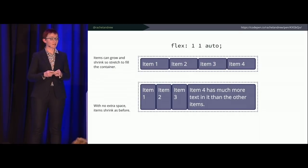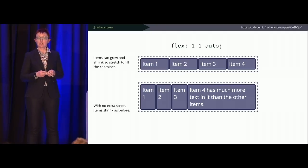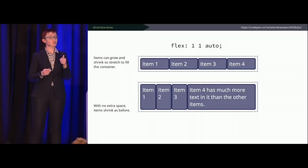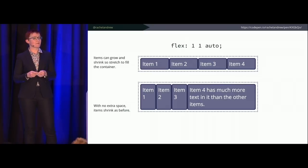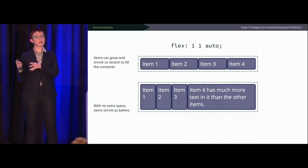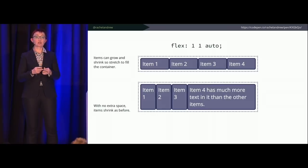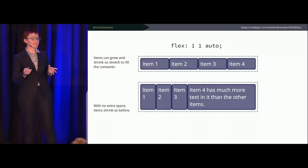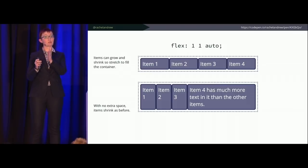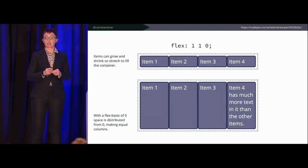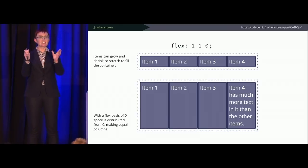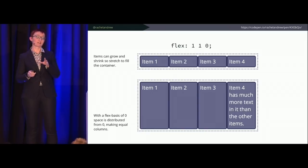To control this behavior you use the flex properties. With `flex: 1 1 auto`, you're saying it can grow and shrink from auto. The top boxes all have about the same amount of text so we end up with four equal boxes — they can all grow and the extra space is shared. But the second example hasn't changed because there's no extra space; we're shrinking, not growing. If you want equal-size columns no matter what, use `flex: 1 1 0` — making flex-basis zero shares all space equally.